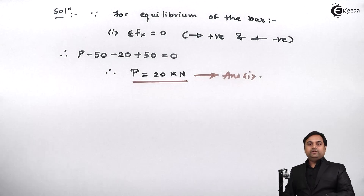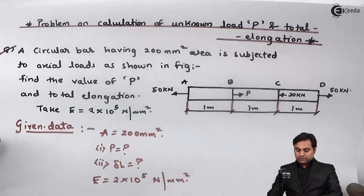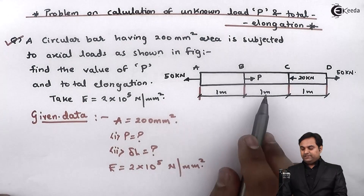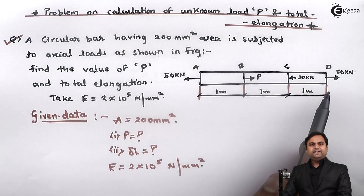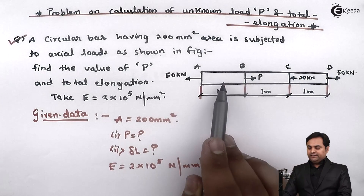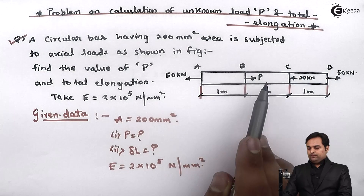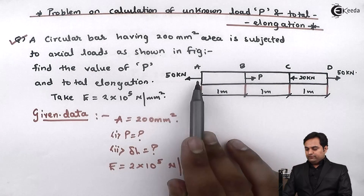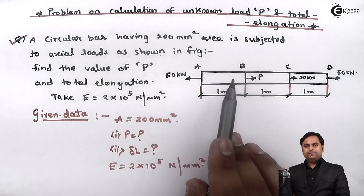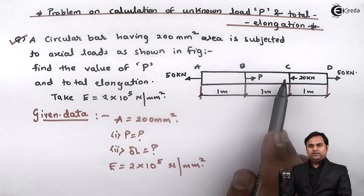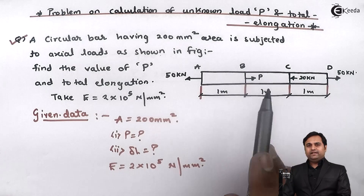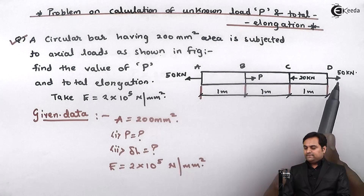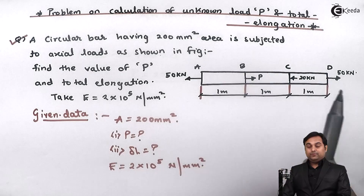The second part is to calculate the total deflection. For that we separate each bar section and calculate the deflection in portion AB, portion BC, and portion CD, then add them together. I'll calculate deflection in AB first, then CD, and finally BC last.